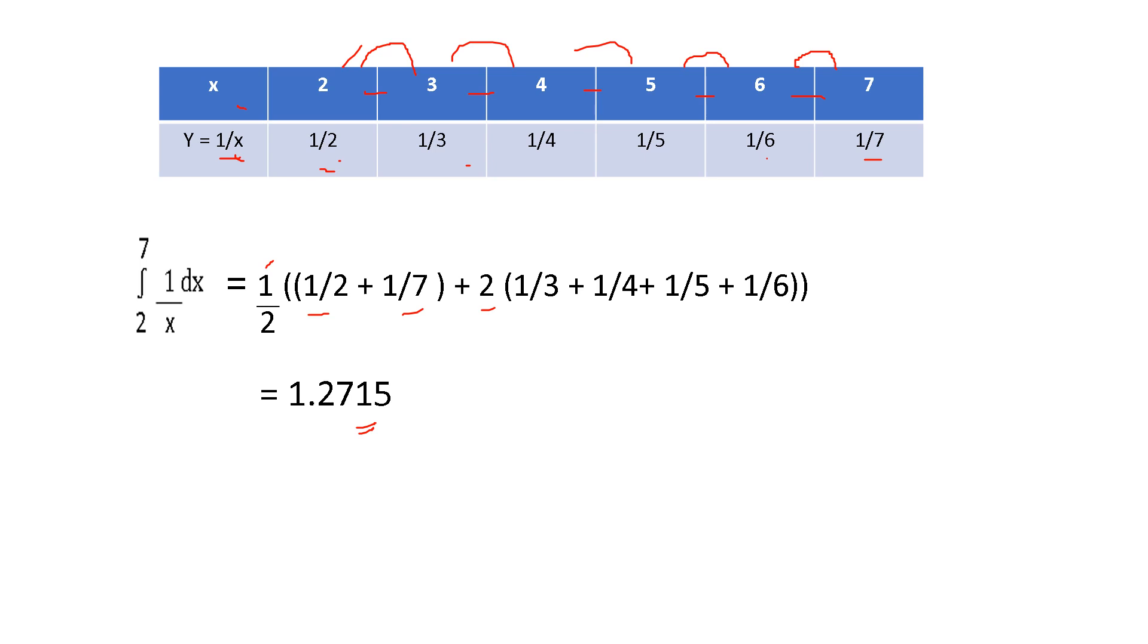This is the approximate value. This is how trapezoidal rule can be implemented. Hope it was clear for you. Thank you.